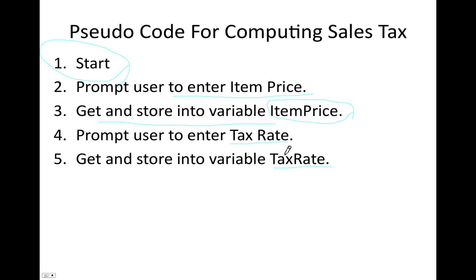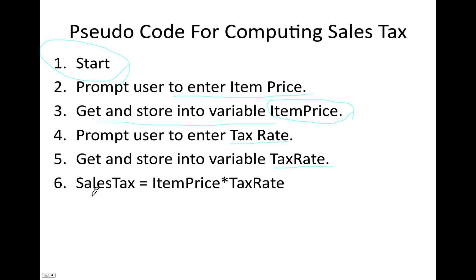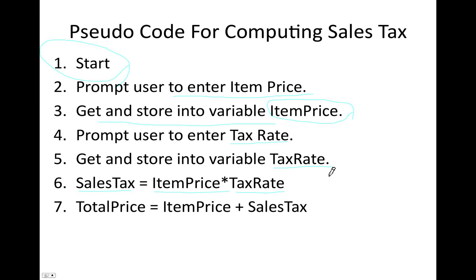Now we have the item price and the tax rate, which gives us the basis for computing the sales tax. The formula — which will be converted into Java source code — is: salesTax = itemPrice × taxRate. Then, since we have the sales tax and the item price already, we compute: totalPrice = itemPrice + salesTax.